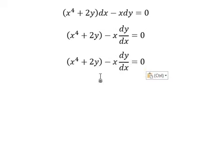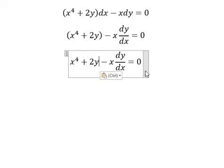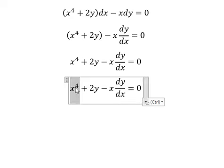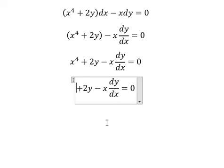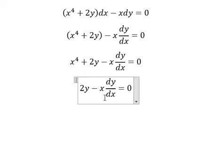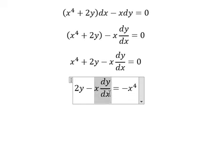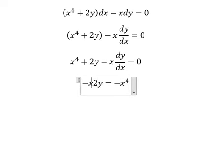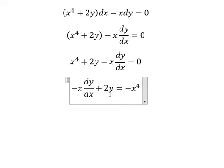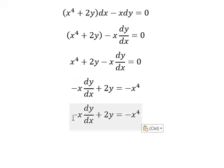Next, I will move this term to the outside. Then we put this one over to the right side. Now I will arrange it like this. Next, we divide both sides by negative x.